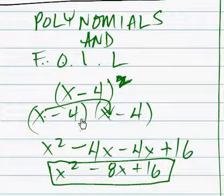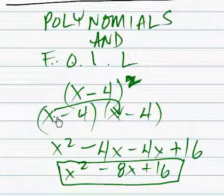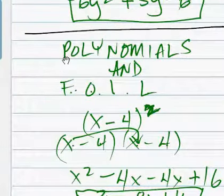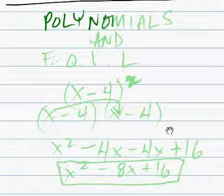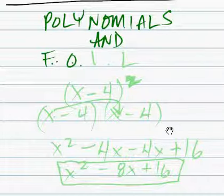Greetings, Dennis Daniels here. Polynomials and foiling. FOIL stands for first, outer, inner, and last.